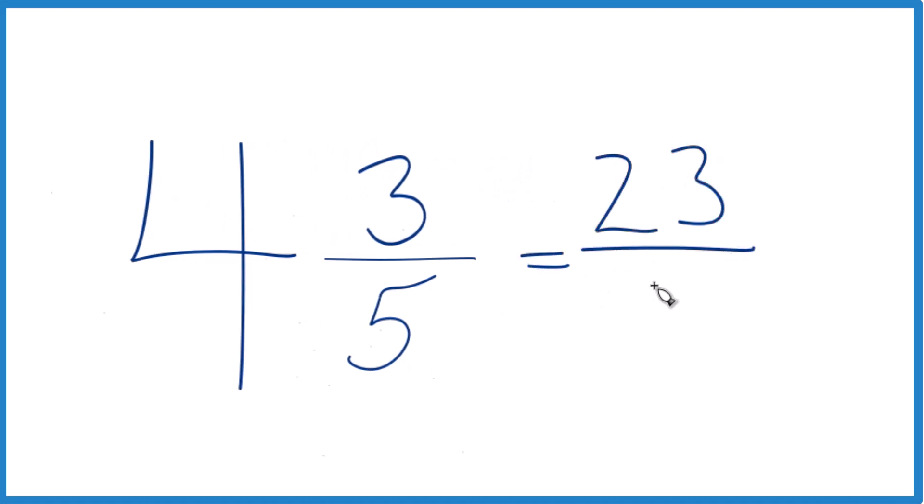Bring the denominator 5 across, and the mixed number 4 and 3 fifths equals the improper fraction 23 fifths. It's improper because the numerator is larger than the denominator.